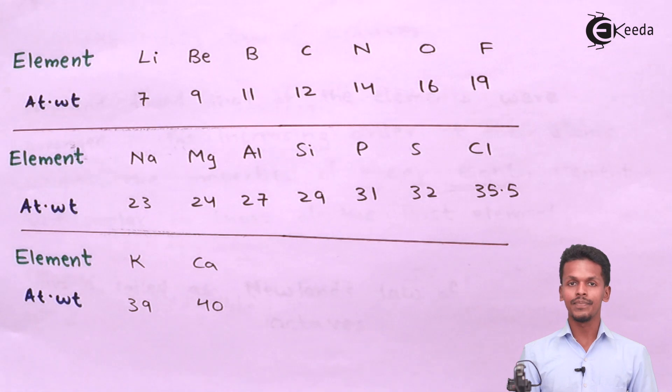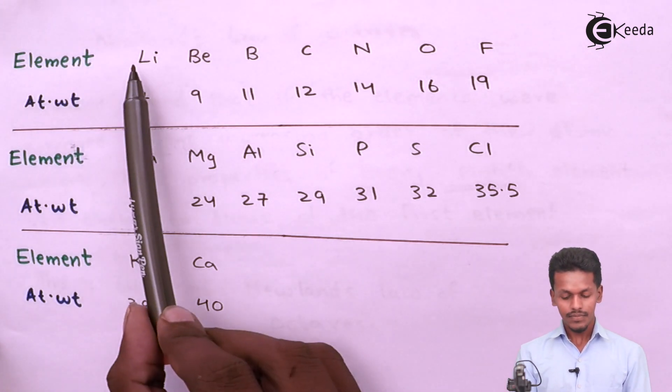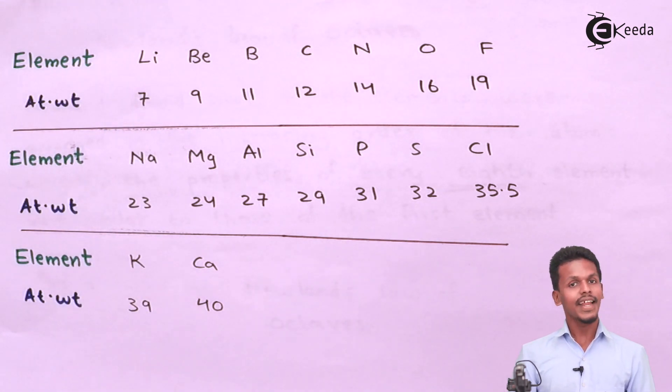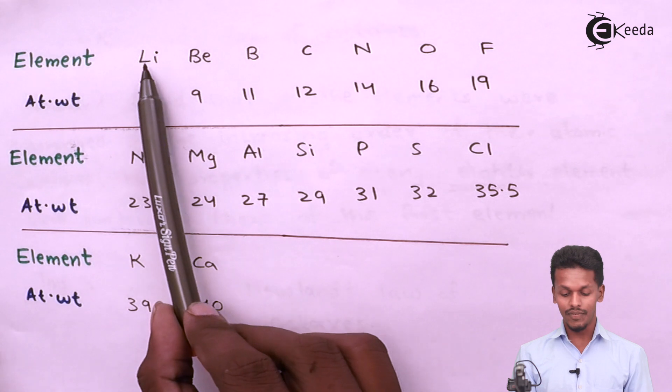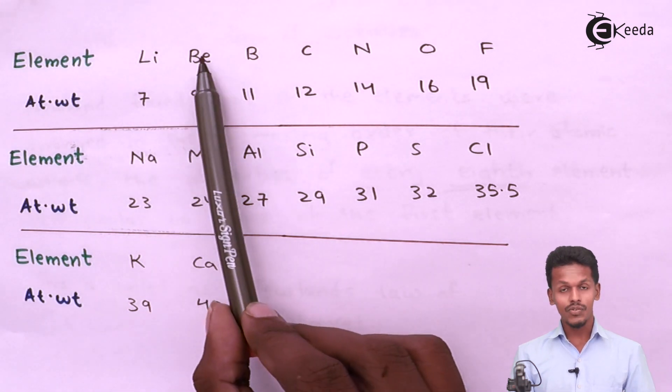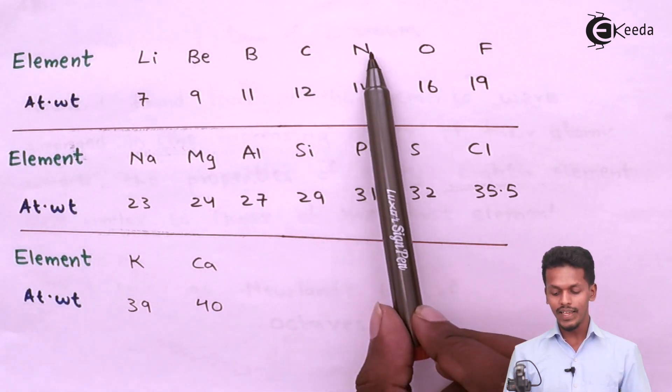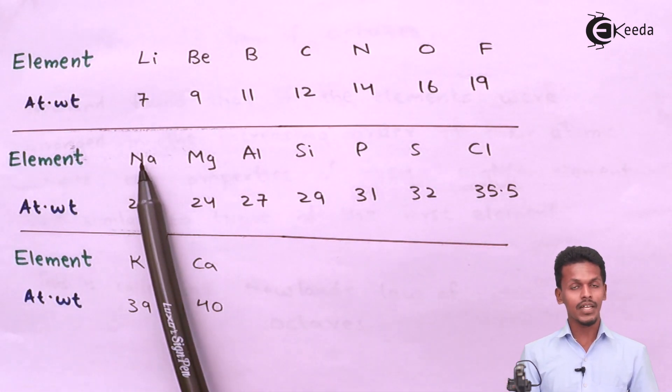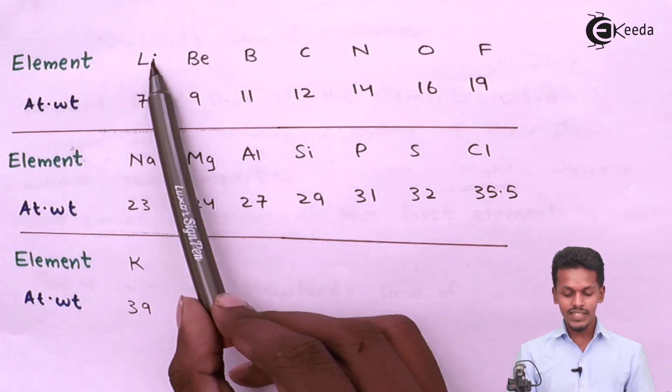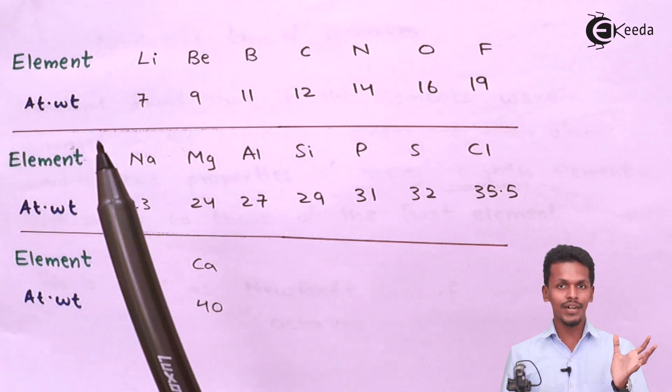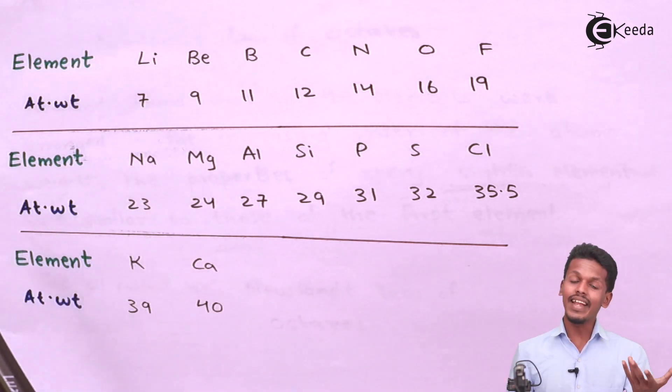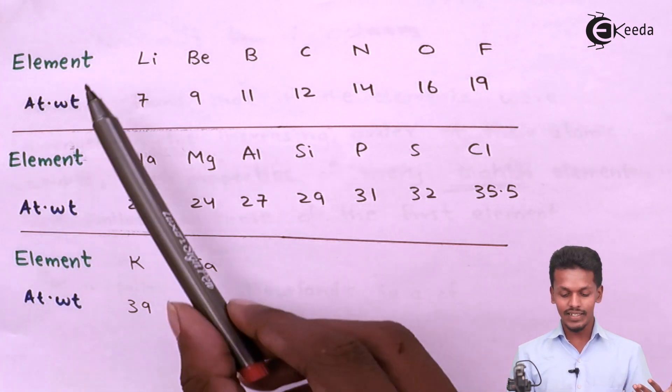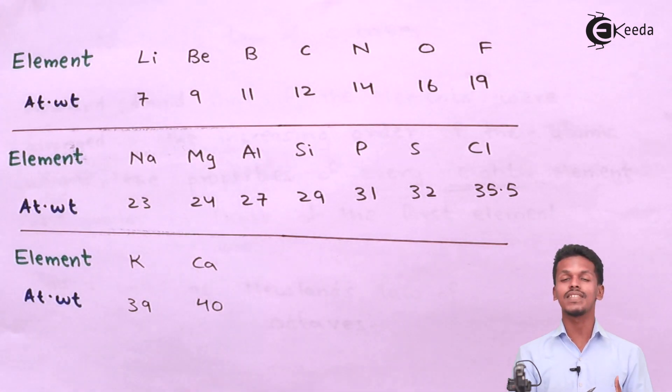If we observe, lithium is the first element, and counting from lithium as one, two, three, four, five, six, seven, the eighth element would be sodium. Since lithium is the first element and sodium is the eighth element according to Newland's octave, lithium and sodium will have the same chemical property.